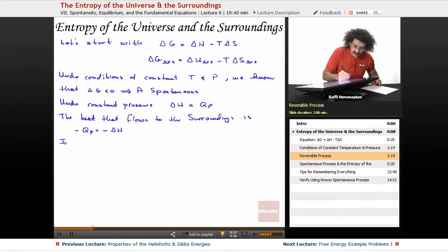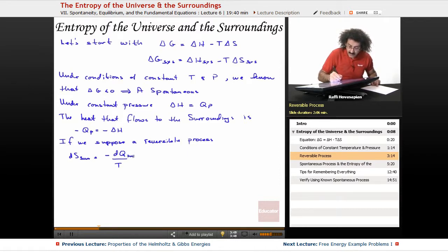Now, if we suppose a reversible process, well, the dS of the surroundings is equal to minus dQ over T, minus dQ of the surroundings, which is this thing right here, equals minus delta H over T. Well, actually, let me stick with differentials and then I'll do the finite, so minus dH over T.